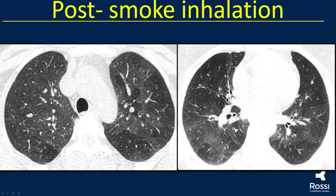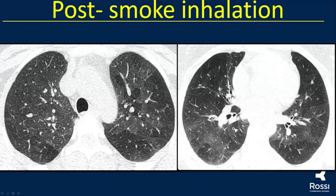This was a patient with post-smoke inhalation air trapping disease. We see the mosaic attenuation pattern with areas of high attenuation and areas of air trapping, mainly in a patient who was exposed to fire in a closed environment.